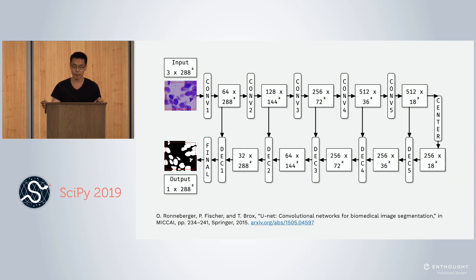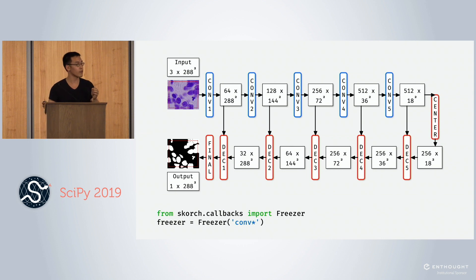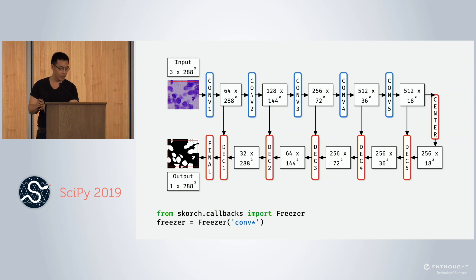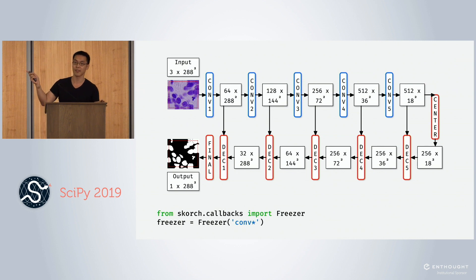We would also like to use pre-trained neural networks here. We do the standard freezing: we freeze the blue layers going down and allow the red layers to update their weights. In Scorch, there's a Freezer callback just like before. We freeze the layers whose names start with 'conv', which I deliberately named for my module, using a glob pattern.